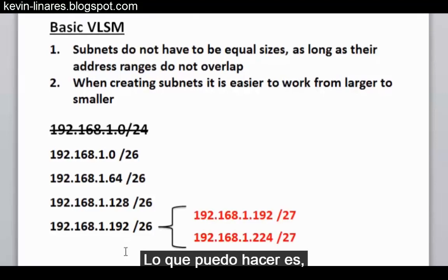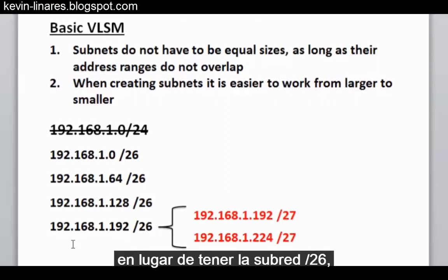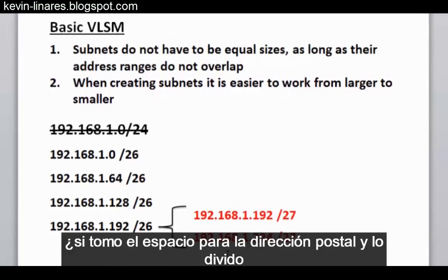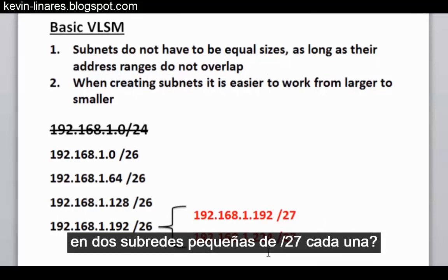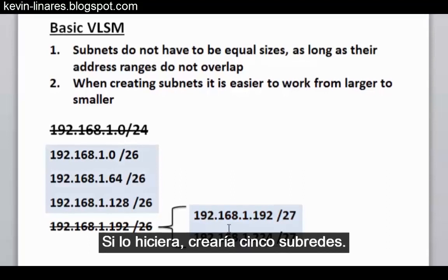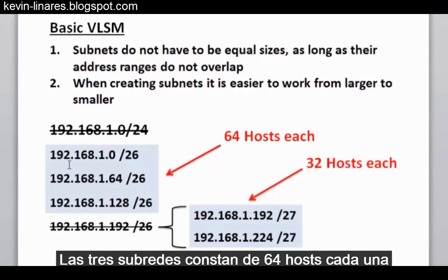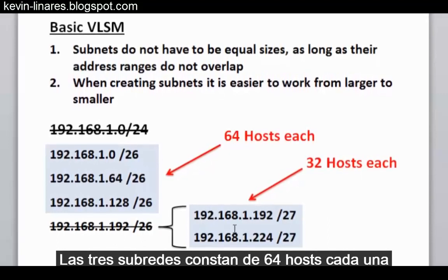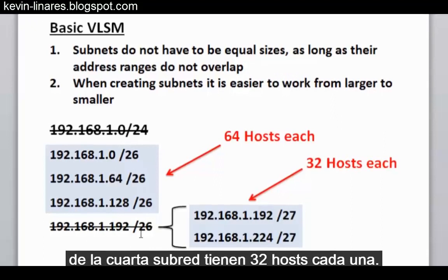What I can do is, instead of having this subnet as /26, I can take that address space and divide it into two smaller subnets, each sized /27. If I do this, I effectively have created five subnets. The three original subnets are 64 hosts each, and the two new subnets created from the fourth subnet are 32 hosts each.